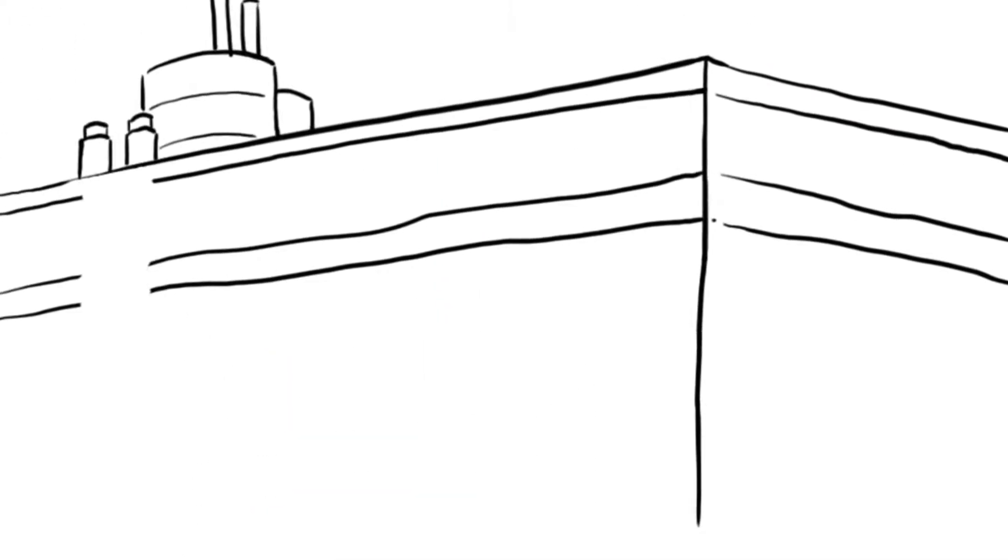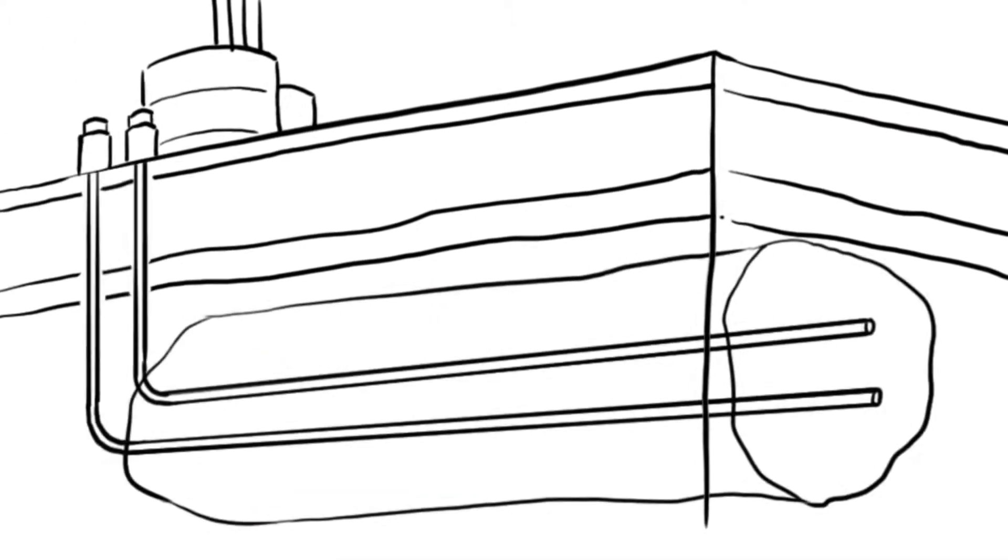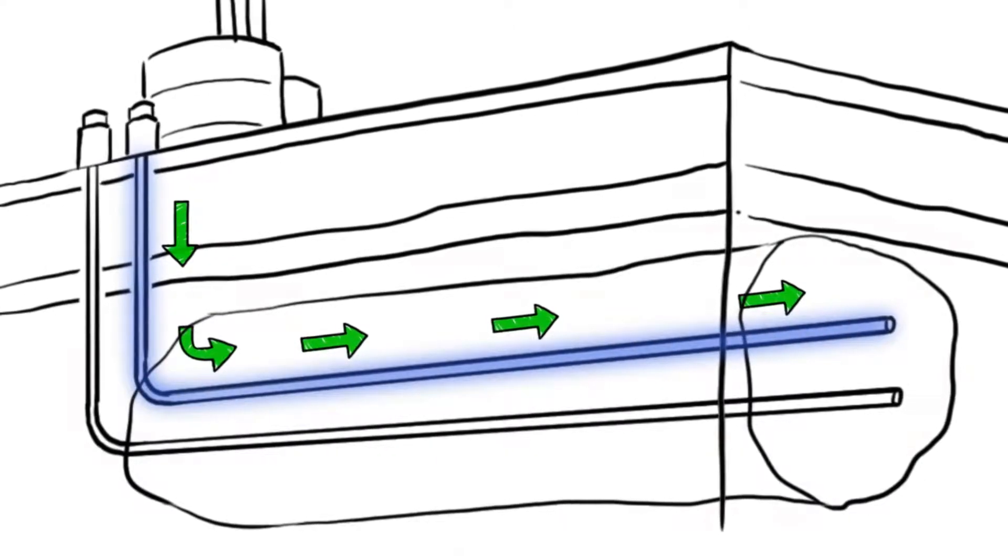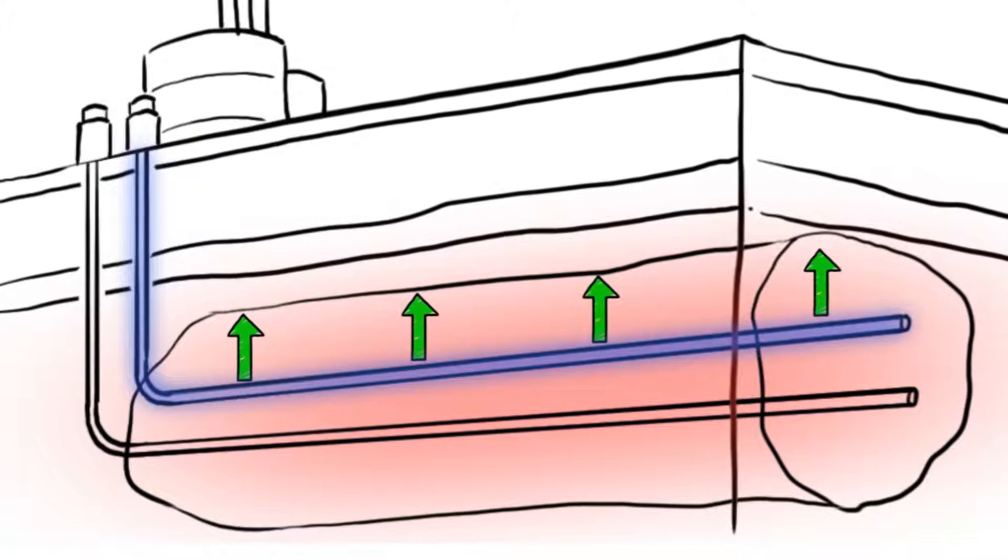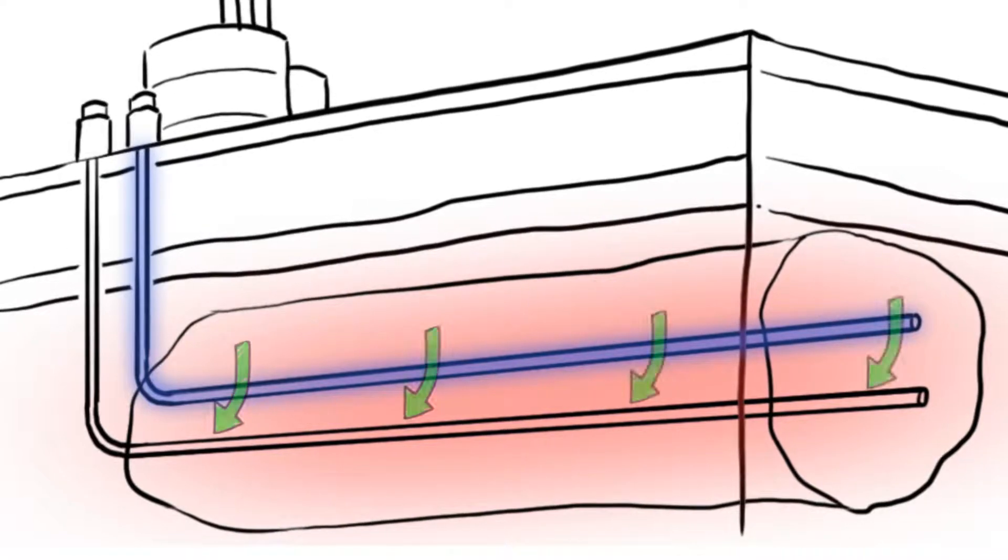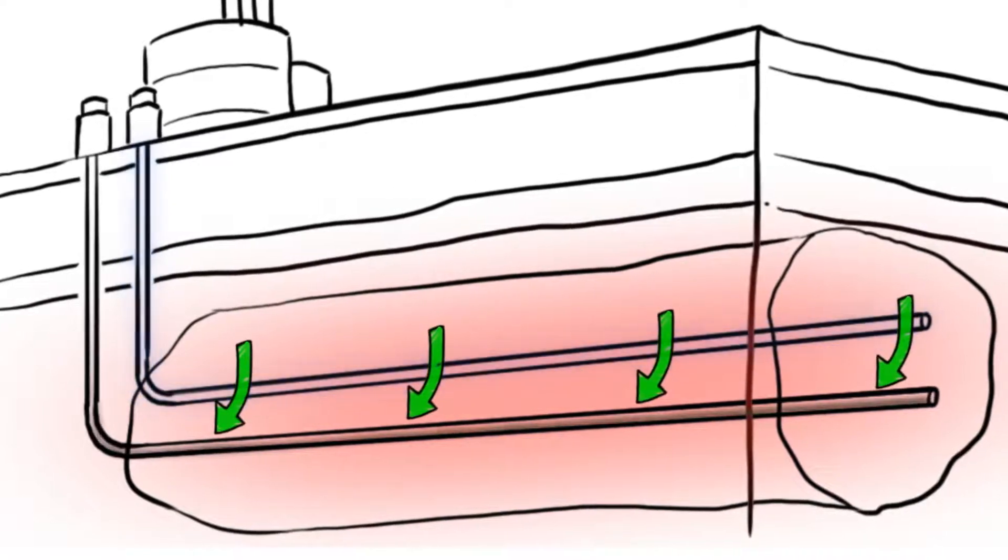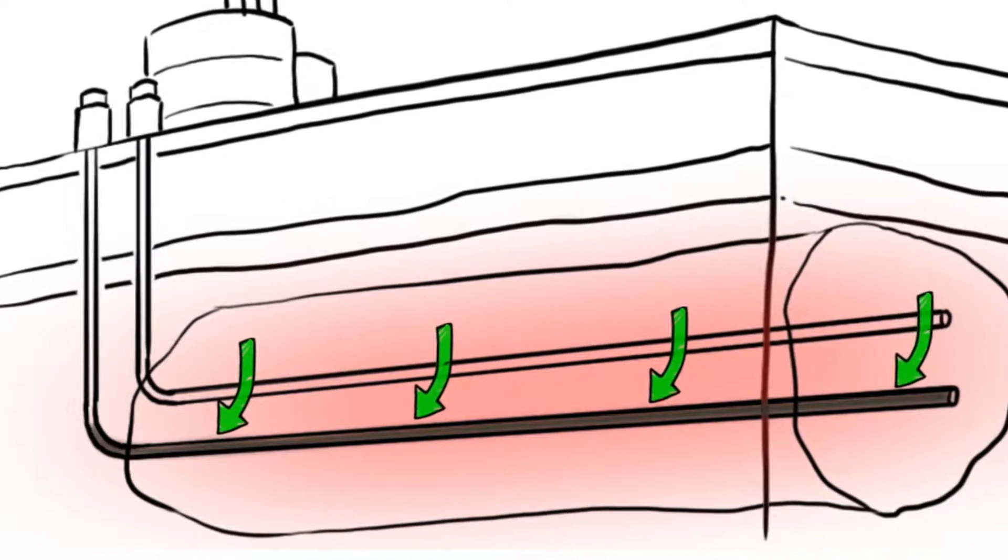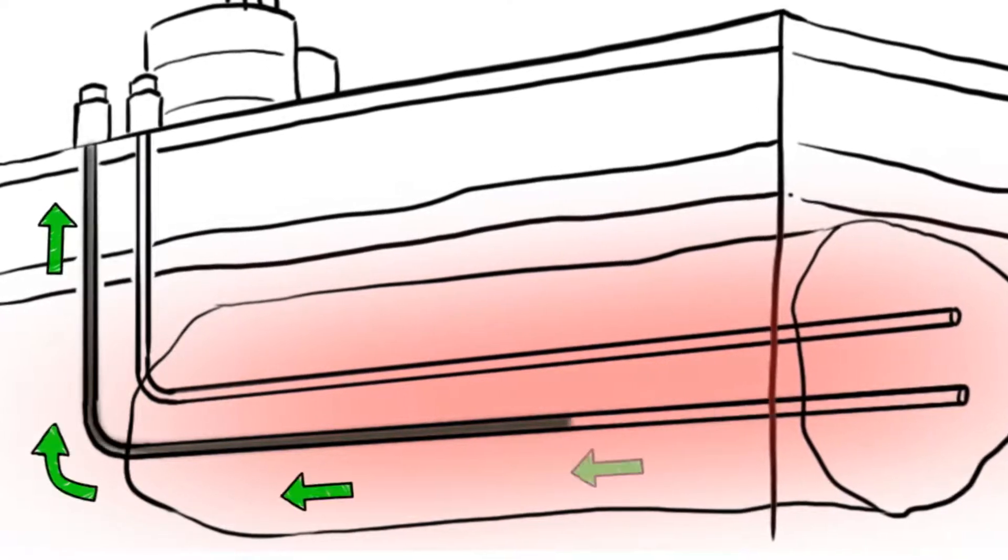In a SAGD project, two horizontal wells are drilled. Steam is injected down the top well, which heats the oil underground until it is runny enough to flow more easily. Gravity then pulls the oil and water from the steam to the lower horizontal well, where it is lifted to the surface.